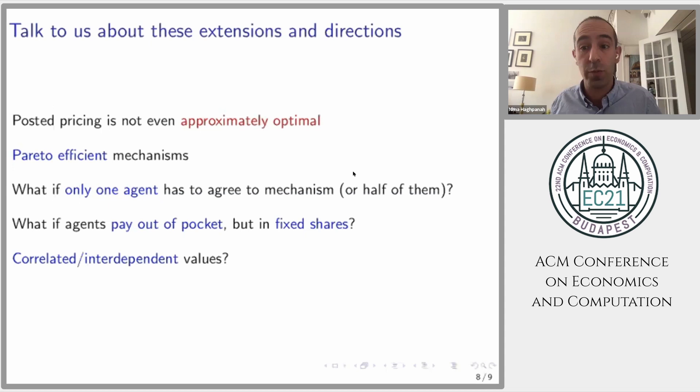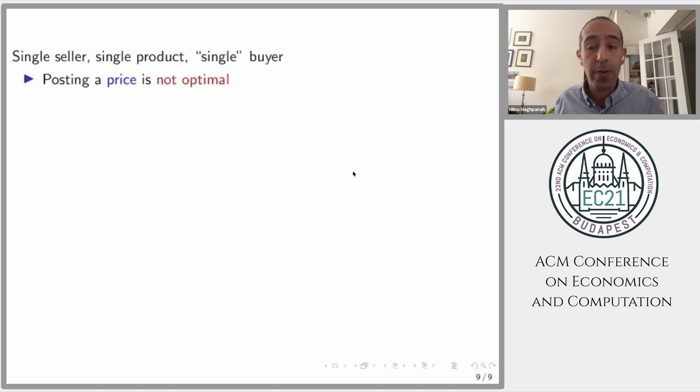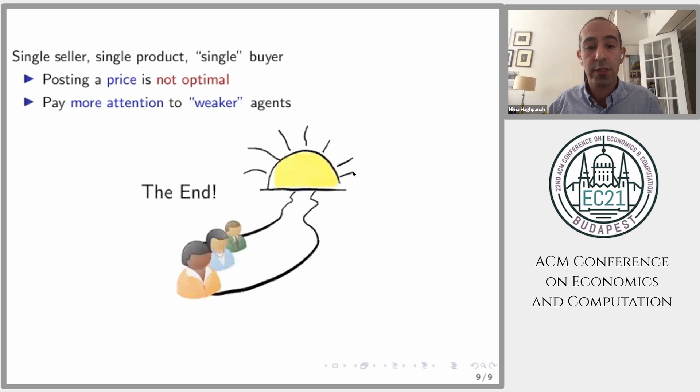To wrap up: we studied a setting with a single seller, a single buyer, and a single product where posted pricing is not optimal, and the key point is that the single buyer has multiple decision makers within it. The optimal mechanism pays more attention to weaker agents. Thanks for your attention — I'm happy to discuss further at the poster session.